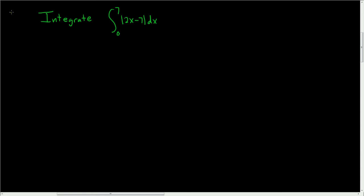We have a definite integral with an absolute value. Usually when this happens, we have to get rid of the absolute value using the definition. Recall: the absolute value of x equals x if x is greater than or equal to 0, and minus x if x is less than 0.